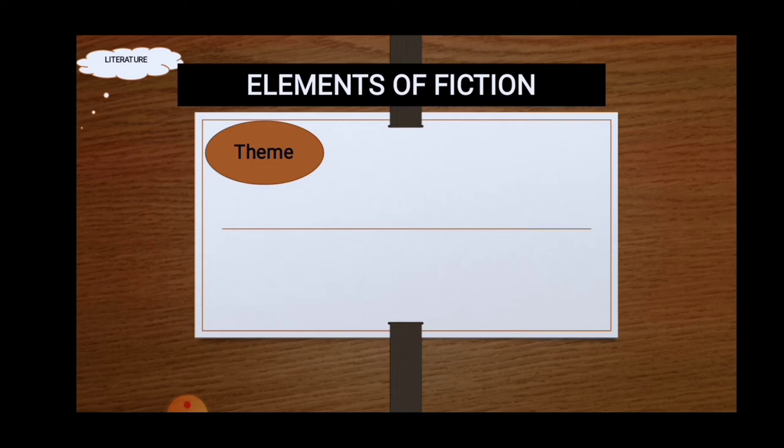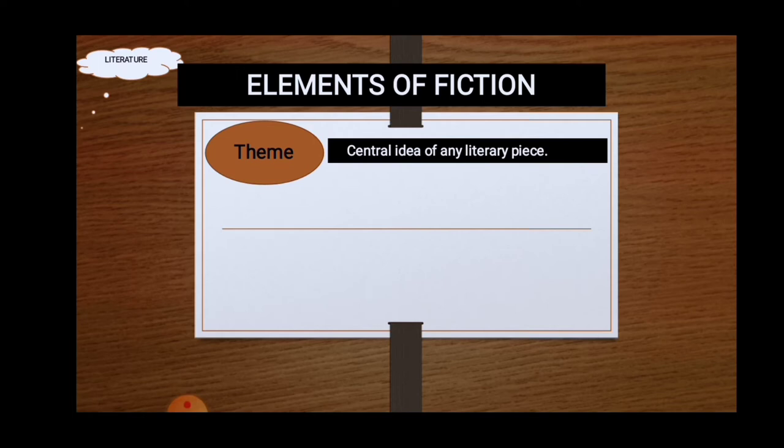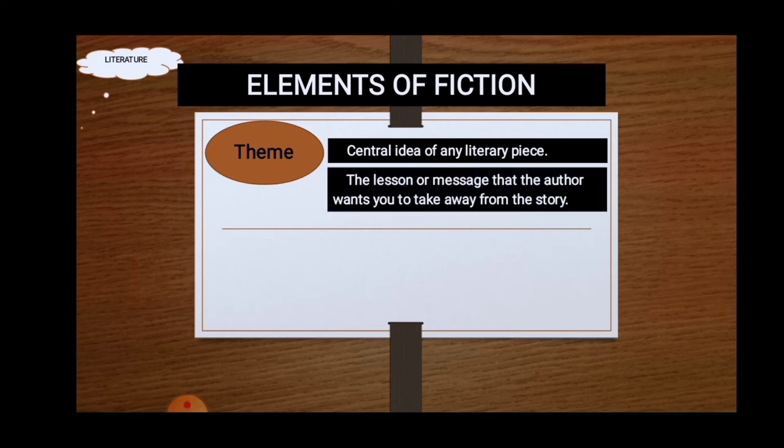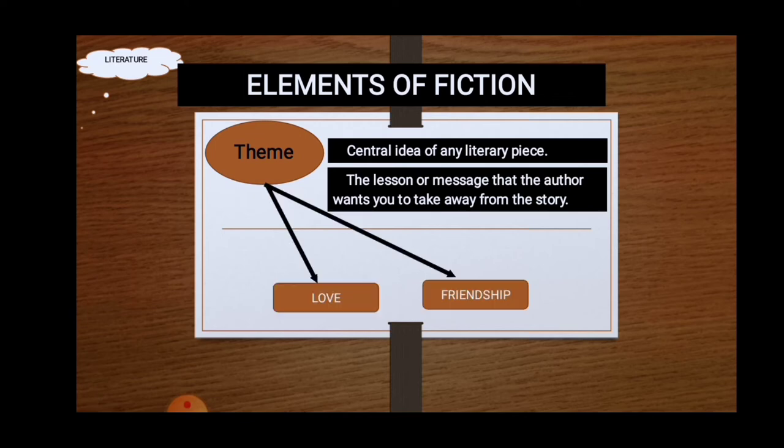Now the third element is the theme. Theme is the central idea of a literary piece. The lesson or message that the author wants you to take away from the story. Theme is what the story is about on a deeper level than what is seen on the surface. It's the big meaning, a thread that is woven through the entire story, and often it is moral. Love, honor, family, redemption, and revenge are all common underlying themes. Theme is an idea thread that winds through the story and supports the plot. Theme can also be, for example, friendship or love.